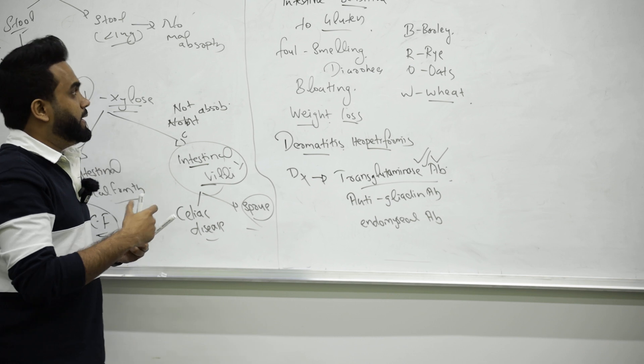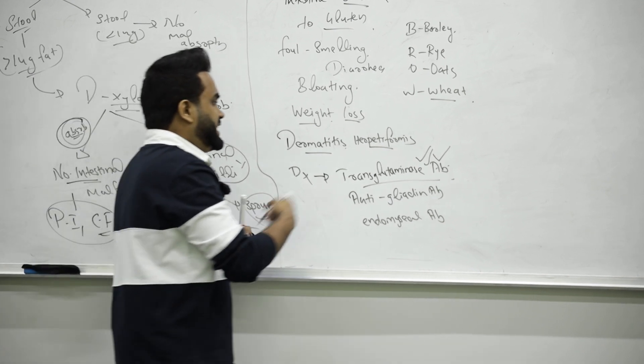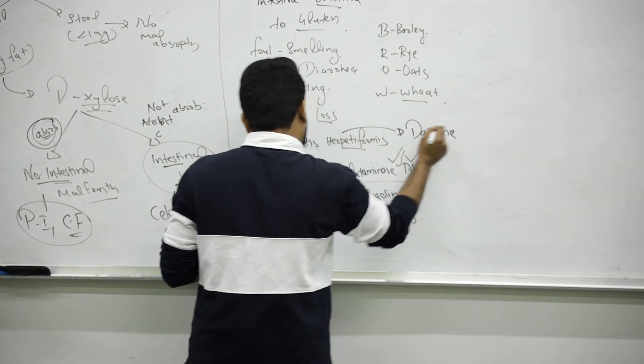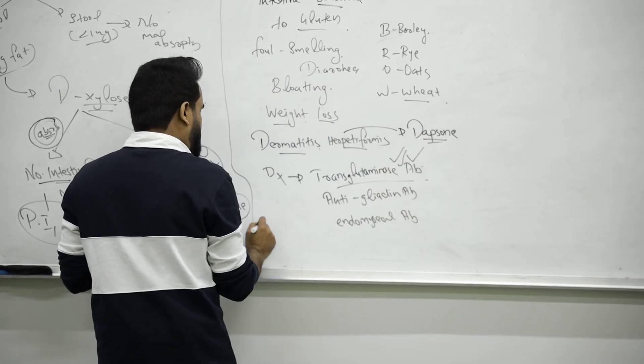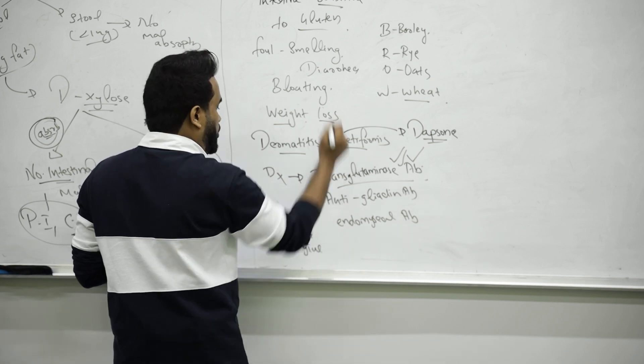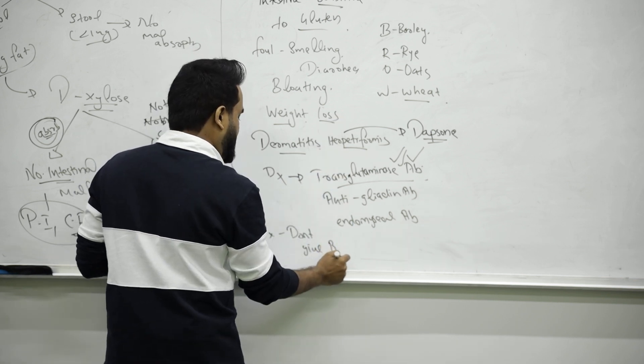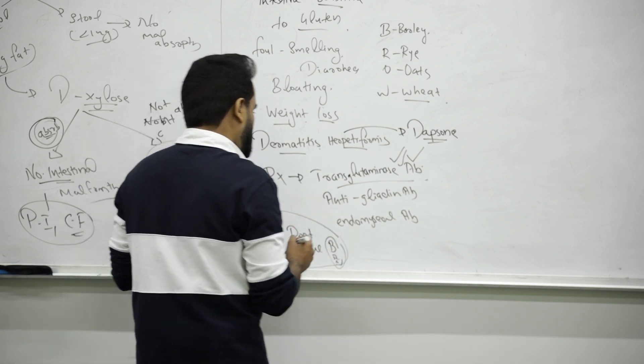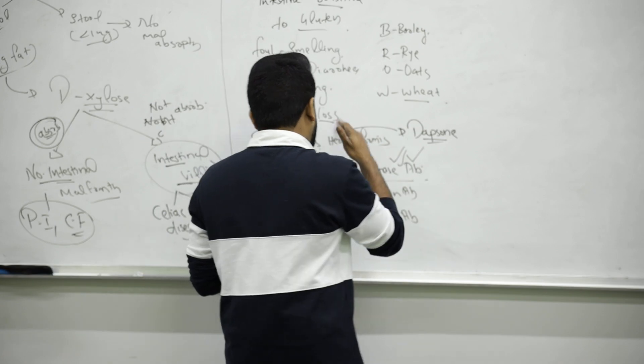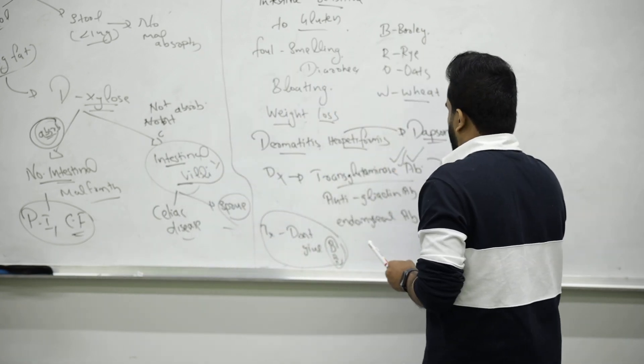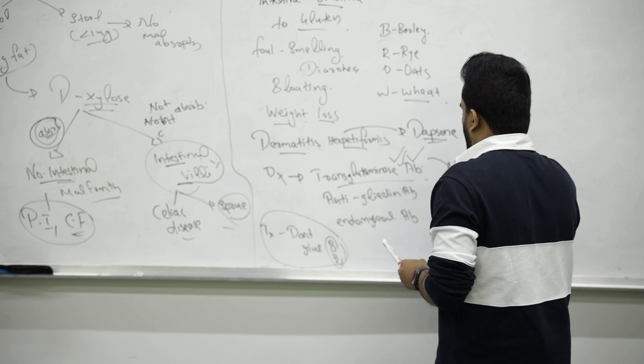For treating dermatitis herpetiformis, we can give dapsone. Then for treating celiac sprue, don't give barley, rye, oats, or wheat. It will take some time for treating the disease. Along with antibody, you can do endoscopy and biopsy to confirm.